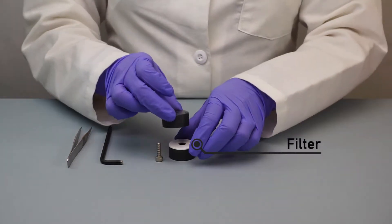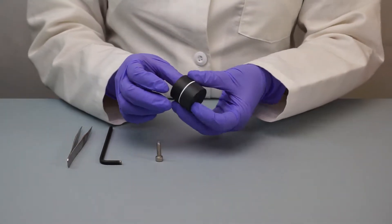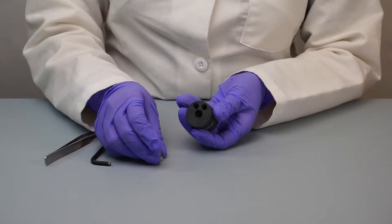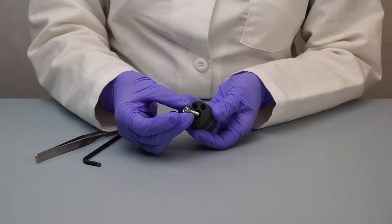To assemble the debubbler, place the filter between the two parts of the housing of the unit and screw them together with the help of an Allen key.